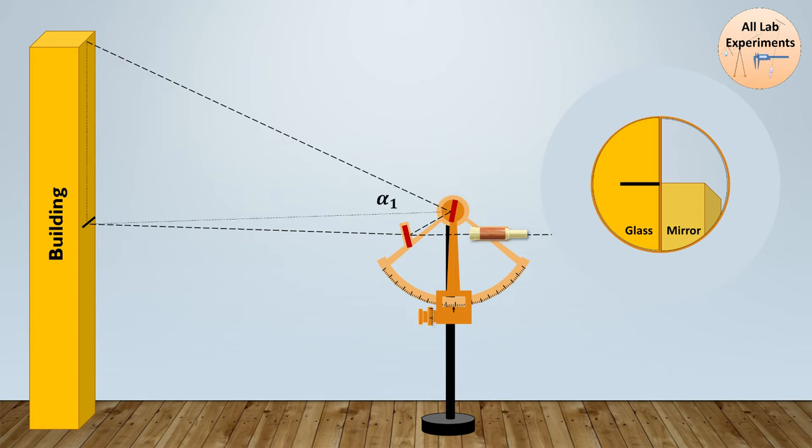Just because this sextant is very small and it is at a large distance from the building, and the distance between these two lights is very small, then there is very less scope of error because of this difference.